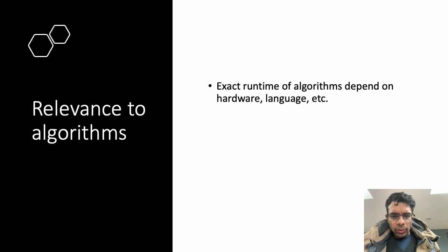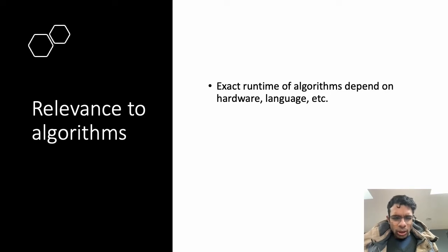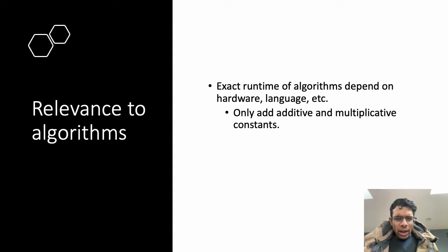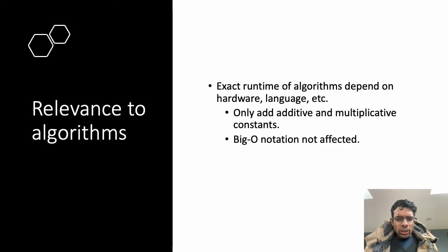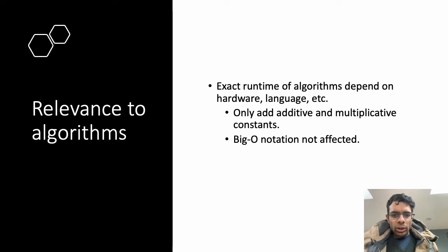If big O notation applies to functions, why do we worry about it in the context of algorithms? The exact runtime of an algorithm as a function of input size depends on many factors — the hardware, the language, Python or C++, etc. — and no one has time to delve into those details. But those details only add additive and multiplicative constants to the runtime, and big O notation by design isn't affected by those things. So any conclusion drawn from big O is robust to those details.